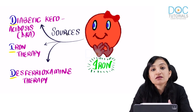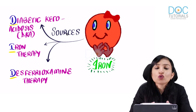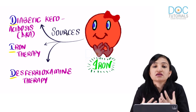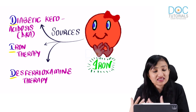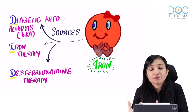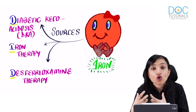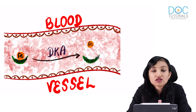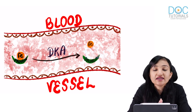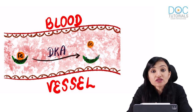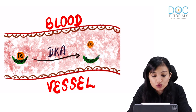Desferrioxamine is an iron chelator. People with iron overload — like thalassemia patients who repetitively receive blood transfusions — are given desferrioxamine therapy because excess iron is toxic to tissues. We know the classification, the morphology (aseptate fungi), and that diabetic ketoacidosis is an important risk factor for Mucormycosis.